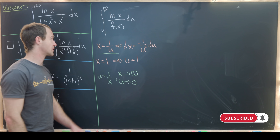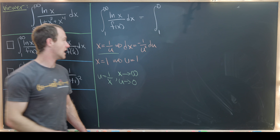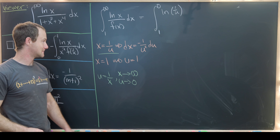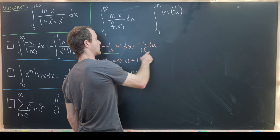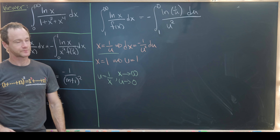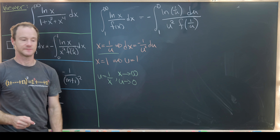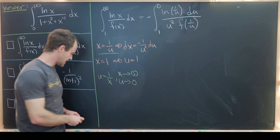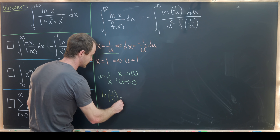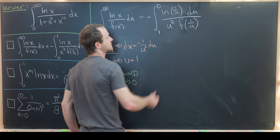Now we can do the substitution. This will be the integral from 1 up to 0 of the natural log of 1 over u — that's plugging in x — and then our dx term will be minus 1 over u squared du, giving us minus du over u squared, times f evaluated at 1 over u. We then use the identity that the natural log of 1 over u equals minus the natural log of u to flip the sign.